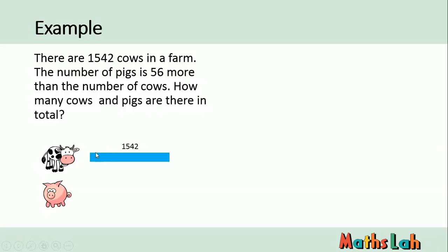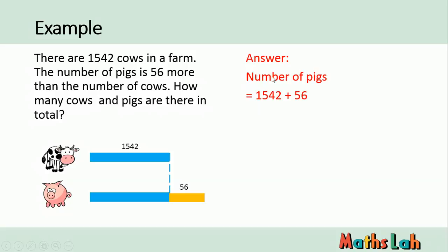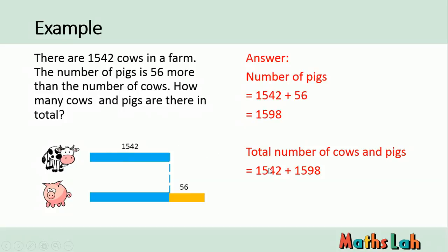This is the number of cows — we draw a bar to represent it. The number of pigs is 56 more, so we draw the diagram. This orange bar represents the additional 56. The total number of pigs is given by this equation. Therefore, the total number of cows and pigs — we just add them together — and that gives us 3140.